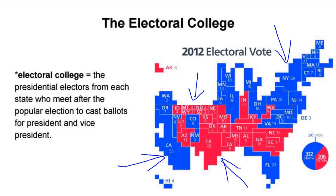Presidential electors from each state meet after the popular election to cast ballots for the president and vice president. In 48 out of 50 states, there is a winner-take-all system where the statewide winner gets every single one of that state's electoral votes. In Maine and Nebraska, however, they use the congressional district method, where the statewide winner only receives two votes right away — representing the two senators — and all other votes are awarded one by one based on congressional districts.